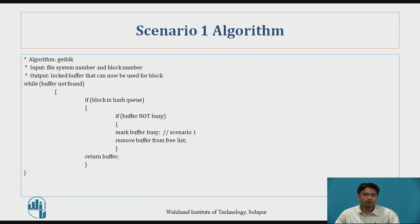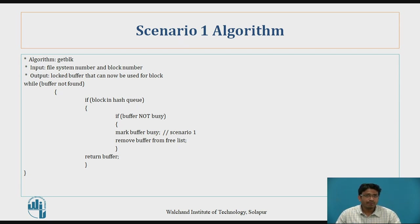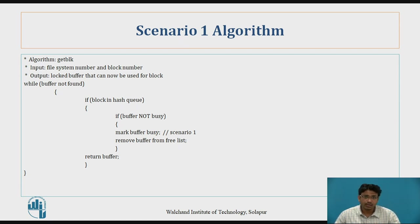Now we will see the getblock algorithm for Scenario 1. We start with: while buffer not found, continue iterating. If the block is in the hash queue, we enter the loop. If the buffer is not busy, we make that buffer busy — as per Scenario 1 — then remove it from the free list, and return the buffer. This is how the Scenario 1 algorithm works.